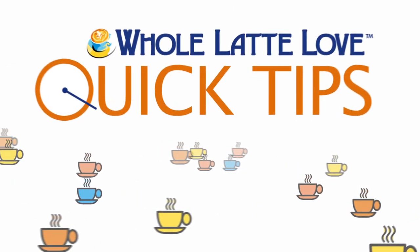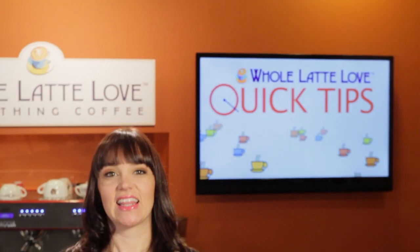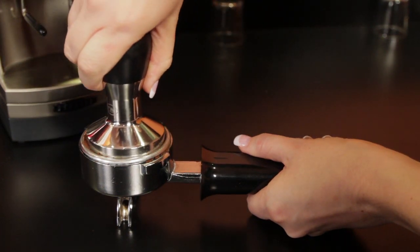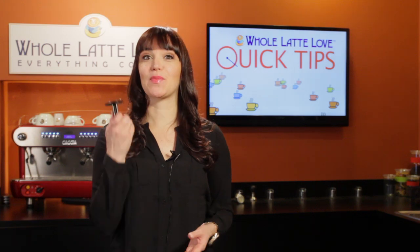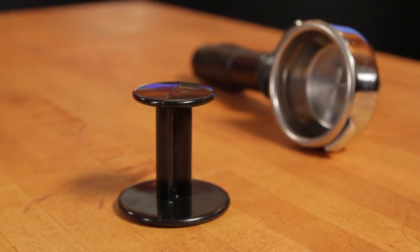Here's another quick tip from Whole Latte Love. Like a quality knife for a chef, a good tamper is the extension of your hand when making espresso. A chef wouldn't use a plastic knife, and you probably shouldn't be using the plastic tamper that comes with most espresso machines.